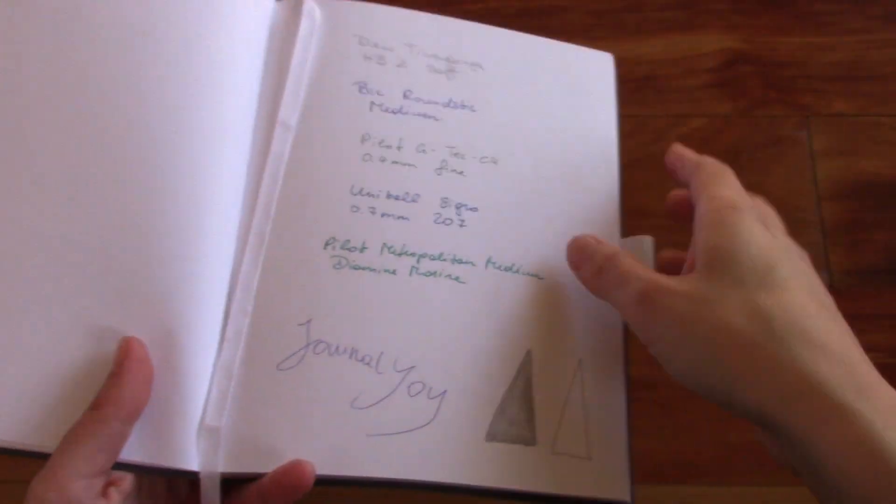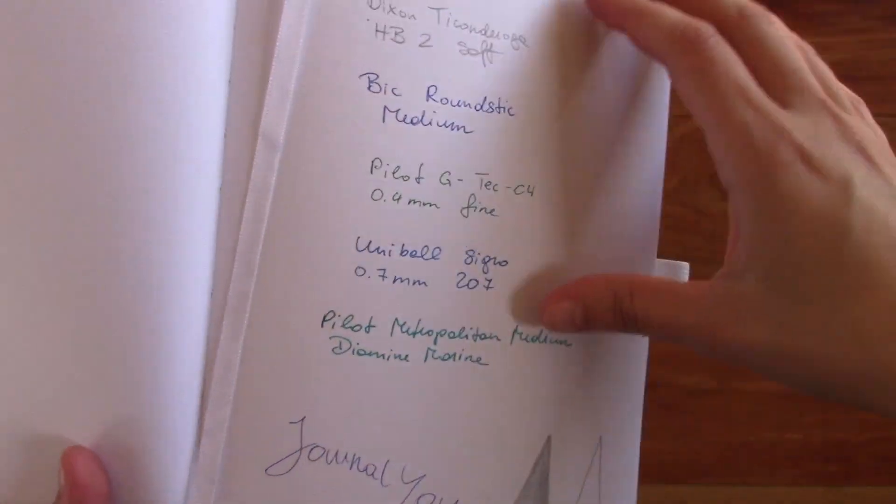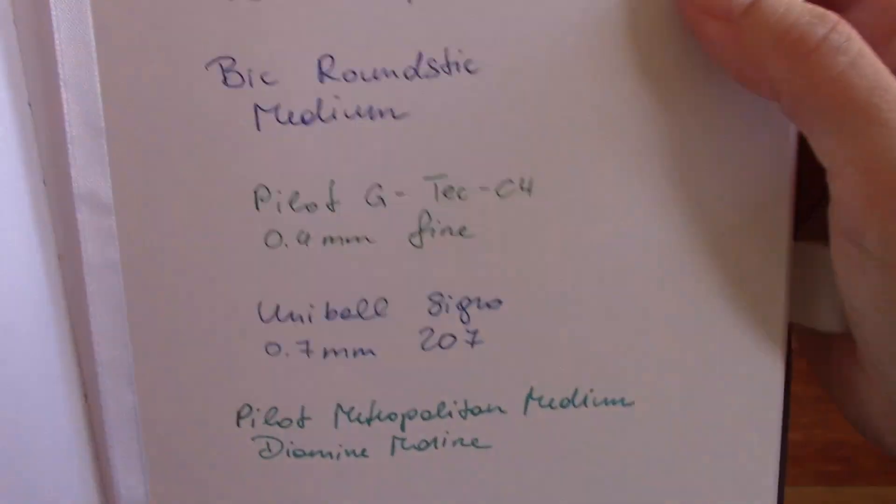So when you write on it, you still have the guidance of the lines, but they are absolutely non-intrusive. So some people don't like, I actually don't either, when the lines are really dark and thick. I find it kind of distracting from my writing experience. So this is perfect for people that don't really like that, but still want that guidance on the page. So here's my writing sample.